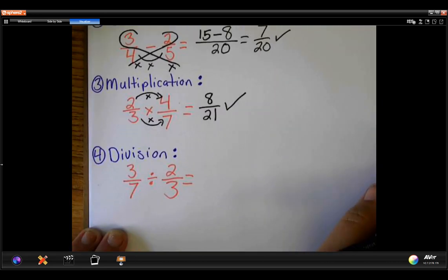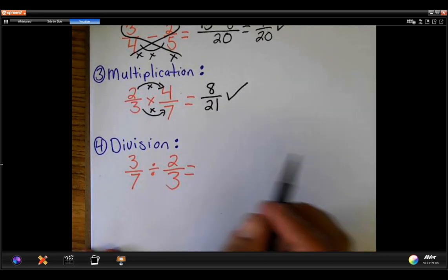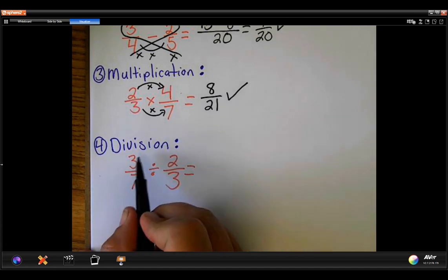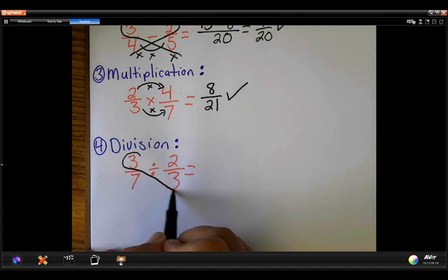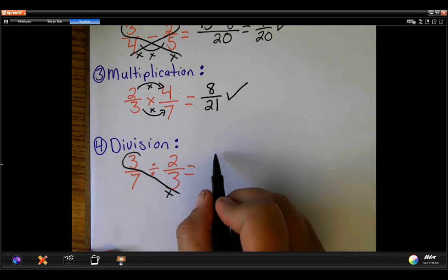Division. Start the same way. I'm going to multiply this. 3 times 3 is 9.